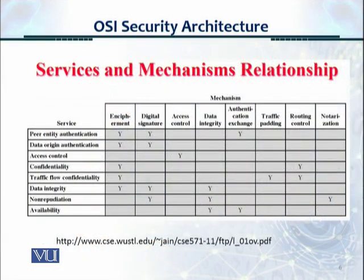Here is a mapping of services and mechanisms under the OSI security architecture. On the left side we have the two types of authentication, access control, confidentiality, traffic flow, data integrity, non-repudiation, and availability. On the top we have the mechanisms: encipherment, digital signatures, access control, data integrity, authentication, traffic padding, routing, and notarization. For example, the data integrity mechanism supports integrity, non-repudiation, and availability services, and could be implemented using an MD5 hash.